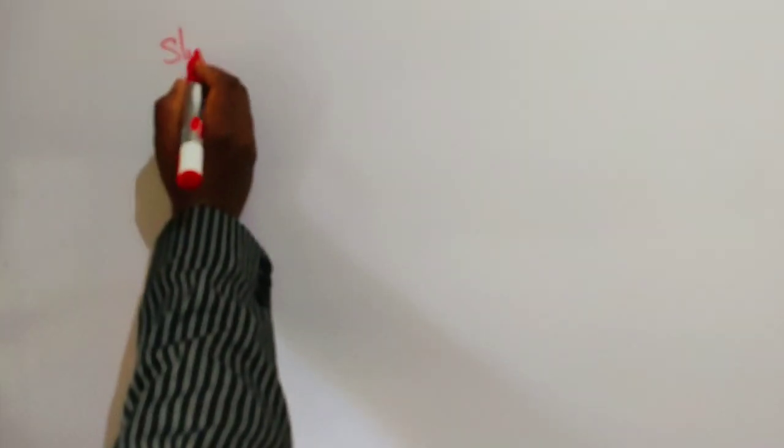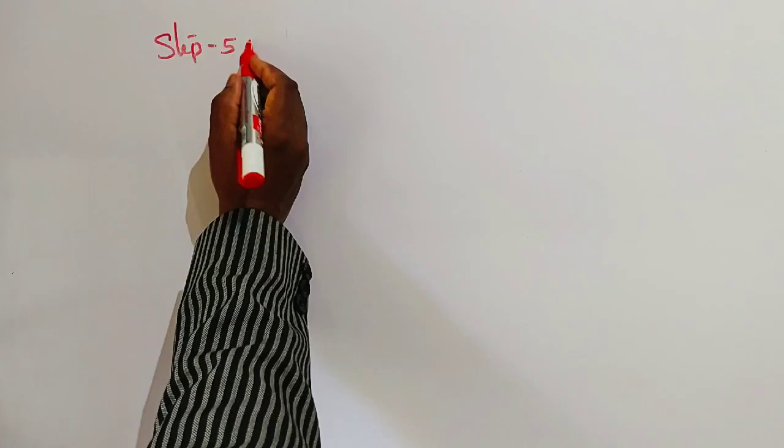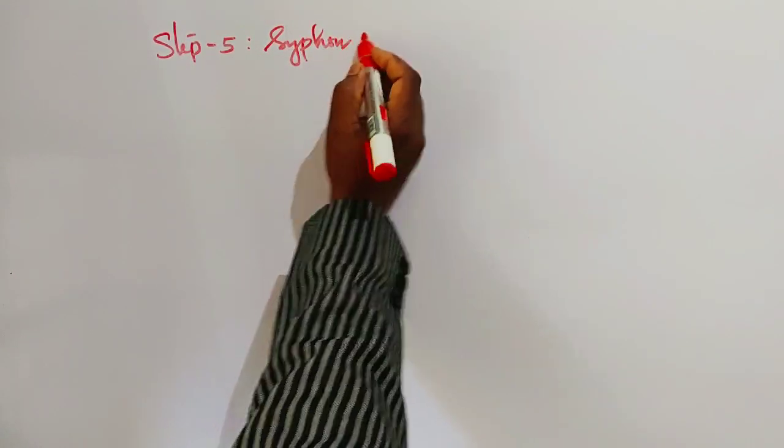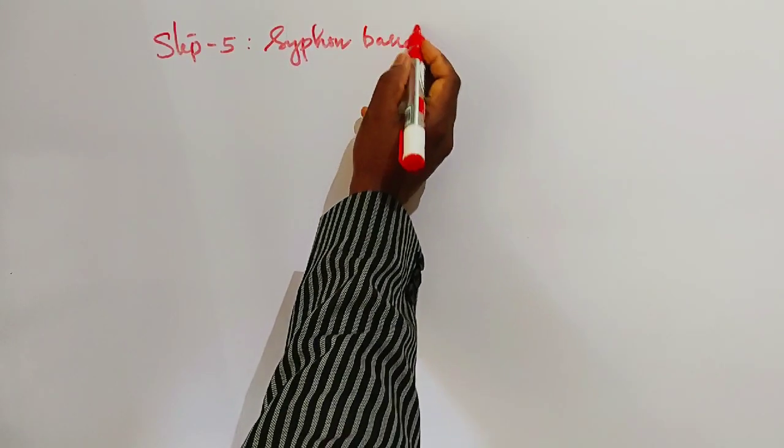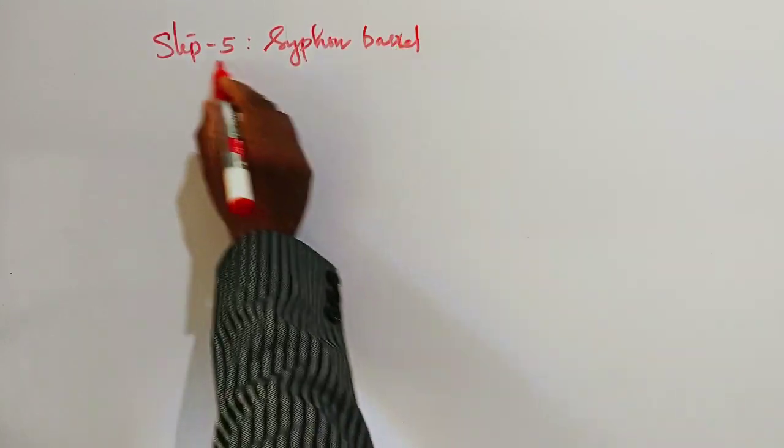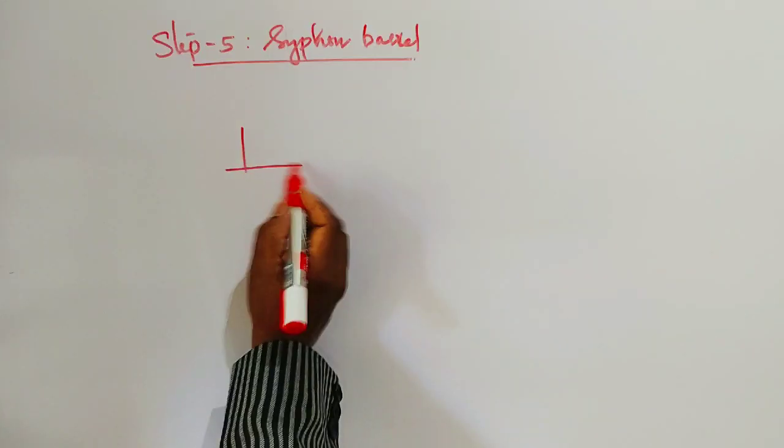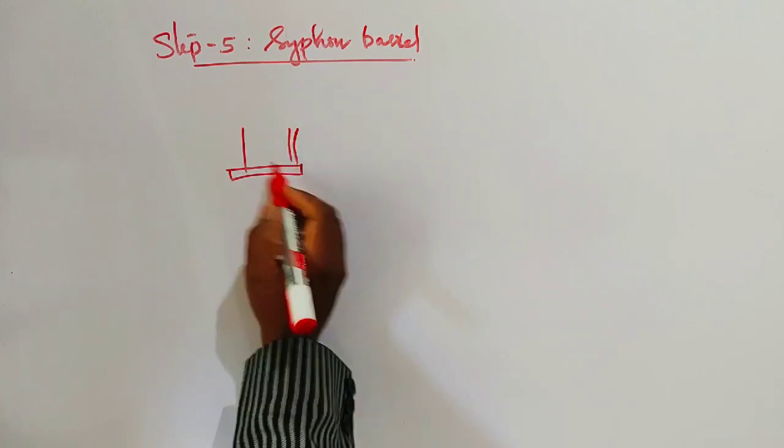Step five: siphon barrel. We need to calculate the details of the siphon barrel. The barrel length is calculated as 17 meters, which runs from the inlet well.